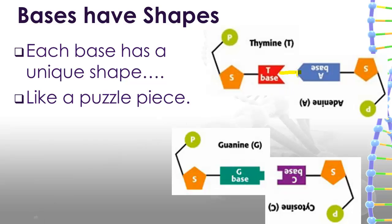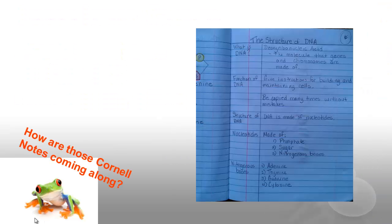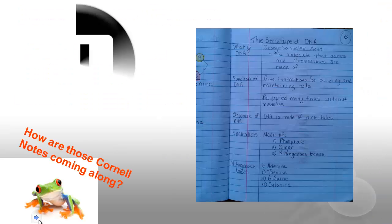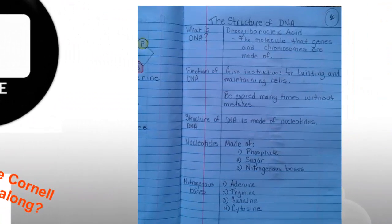Thymine fits with adenine, but it does not fit with cytosine or guanine, and vice versa. How are those Cornell notes coming along? Press pause if you need to.